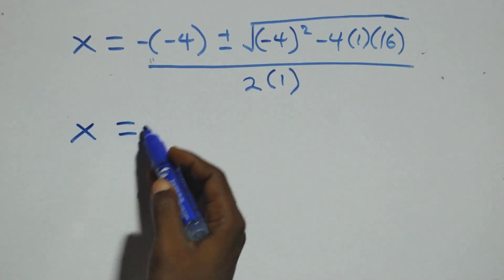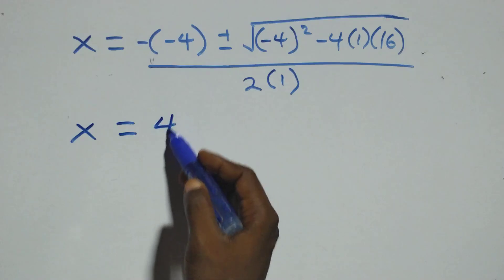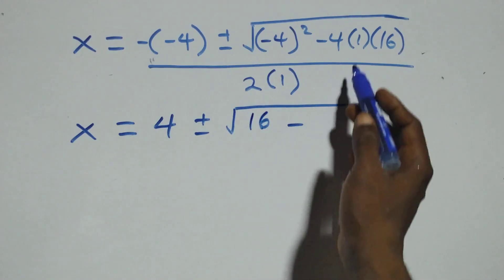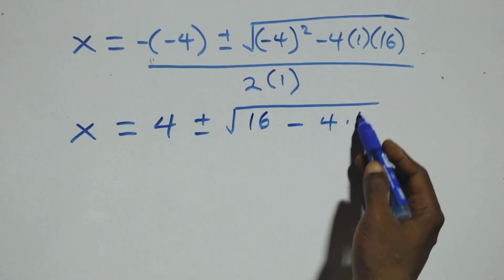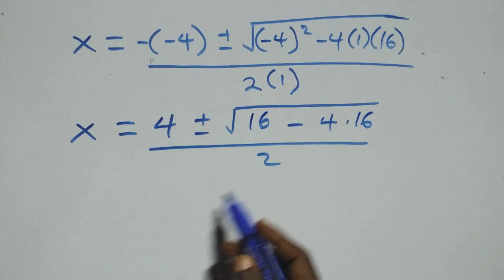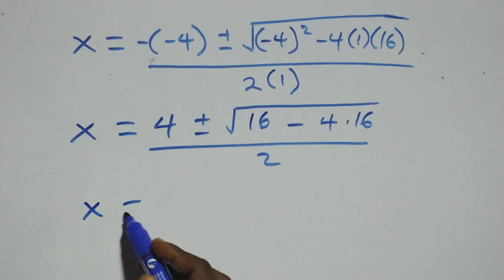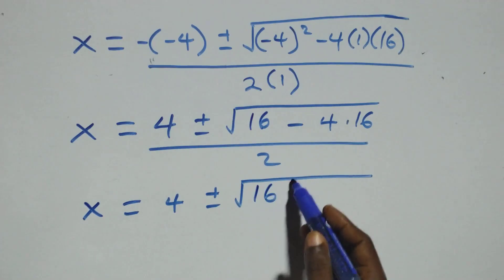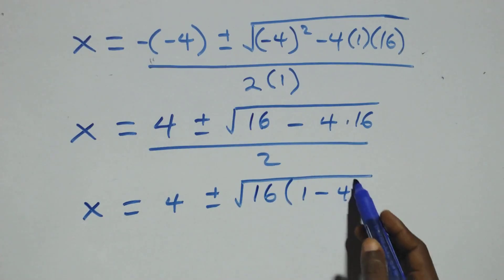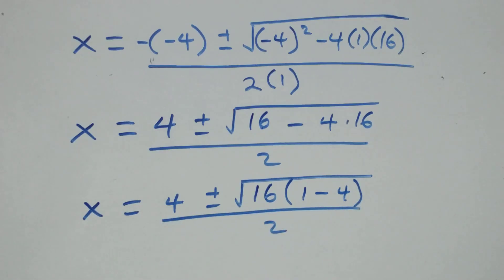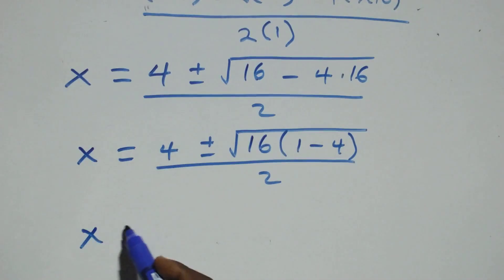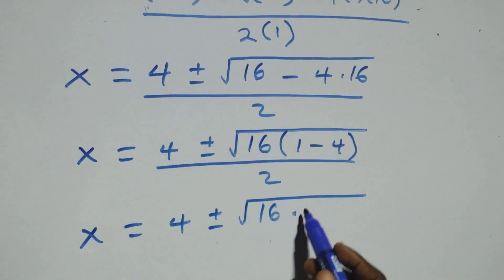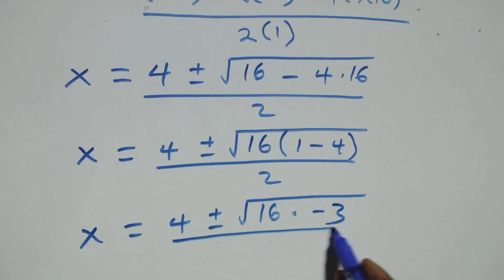Minus times minus is plus, so we have x equals to 4 plus or minus square root of minus 4 squared, that is 16, minus 4 times 1 times 16 over 2. Then 16 is common, so we have square root of 16 into bracket 1 minus 4, over 2.